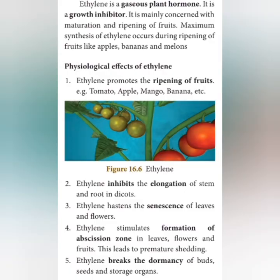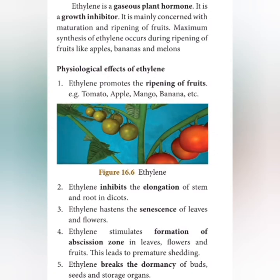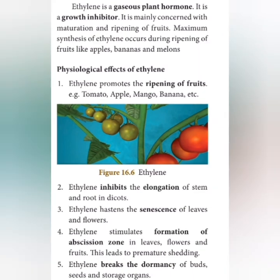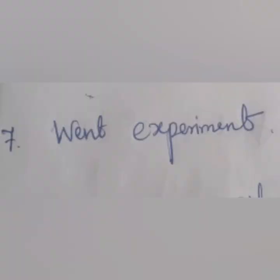The next question is: name the gaseous plant hormone. The answer is ethylene. This is one of the detailed questions. Some physiological effects of ethylene are given — totally five points. You can write any three points for this detail.